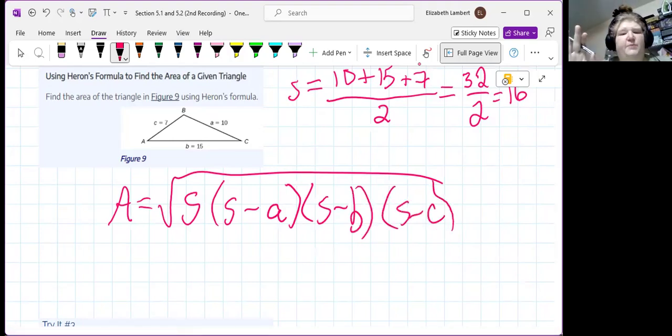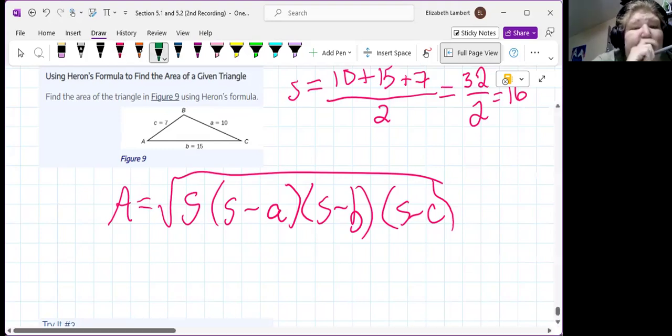And looking at that, your brain might be like, oh, we could multiply those. Like, yeah, technically, we could foil them. Please don't. We only use this formula to find the area. We don't use this formula if we know the area and the sides to try to find the semi-perimeter. So just plug the numbers in the spots.